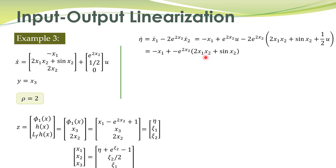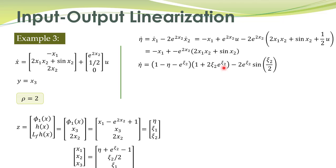We can write this expression in new state variables by replacing x1 and x2 with the new state variables. These are basically the internal dynamics. xi1 dot comes out to be equal to xi2. There appears to be some mistake in the expression for x2 dot that needs correction.